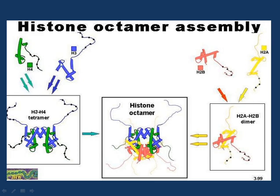When the histone octamer is assembled, first H3 and H4 combine together: one molecule of H3 combines with H4 to form an H3-H4 dimer, and two dimers combine together to form an H3-H4 tetramer. Similarly, H2B and H2A combine to form a dimer, and two such dimers form a tetramer. Both tetramers then combine together to form the histone octamer.